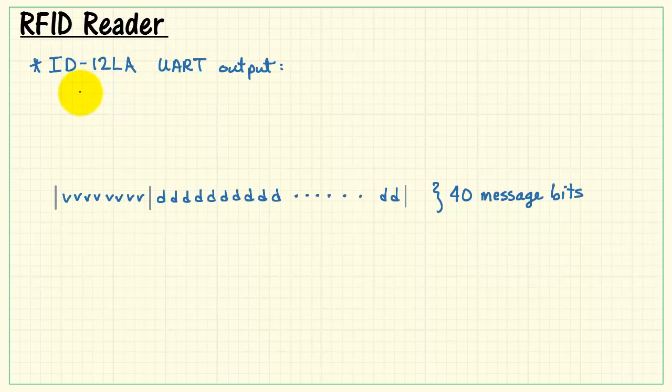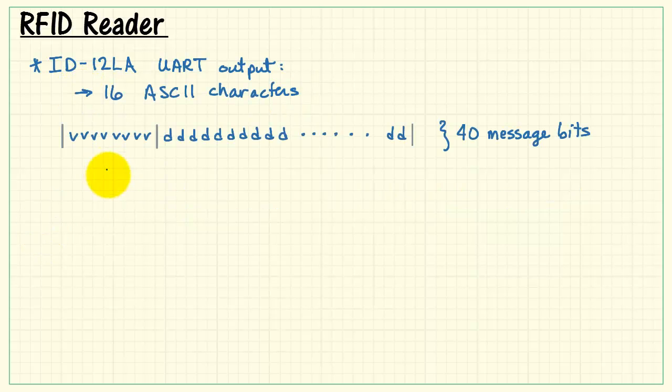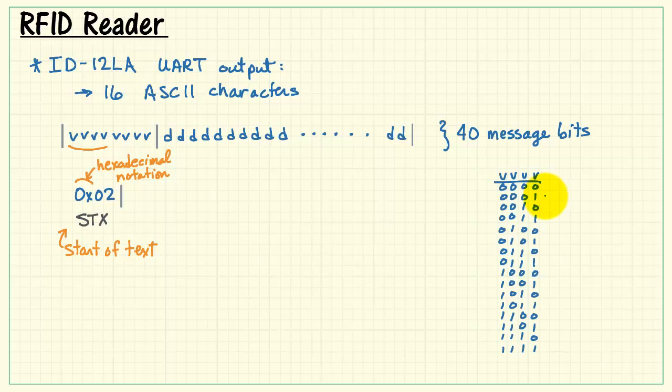Now, let's consider the ID12LA reader, especially the UART output. The reader will develop an output stream of 16 ASCII characters. I'm using 0x to indicate hexadecimal notation. The reader first generates a start-of-text ASCII character, that is, hexadecimal 02. Then, every 4 bits are presented as an ASCII character, and an ASCII printing character.